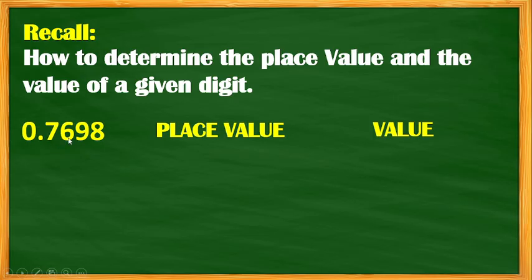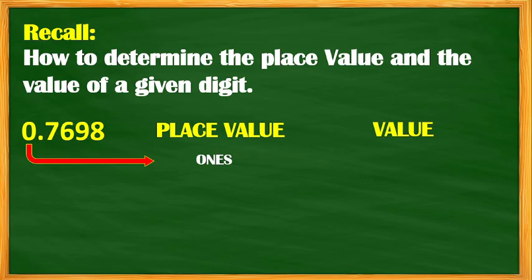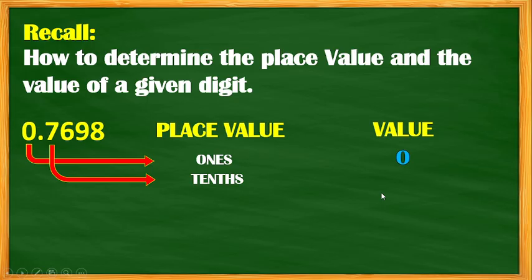We have 0.7698. Let's determine the place value and the value of the given digit. For the digit 0, the place value is the ones place, so the value of 0 is 0. As we already discussed in the last topic, we have no value for the ones digit in decimal form. So 7 is in the tenths place, and the value of the tenths place is 7 — or 0.7 — what we call 7 tenths.